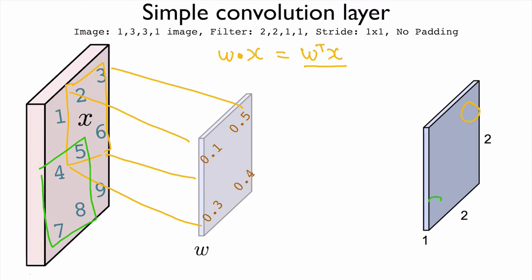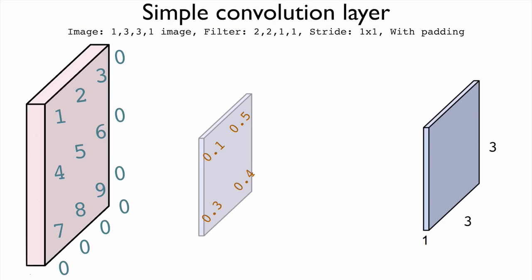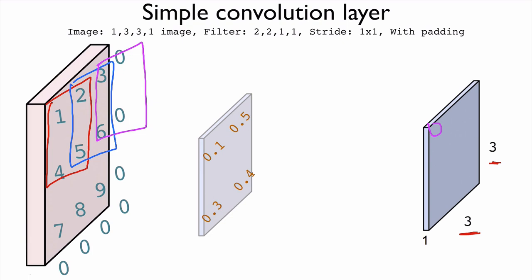It's very common to add zero padding, where we put zeros in the boundaries of the images. By doing that, we can change the output feature map size. For example, with the same 2 by 2 filter, we can look at three positions across and three positions down, so we get a 3 by 3 feature map.